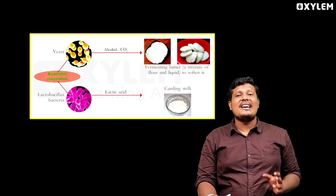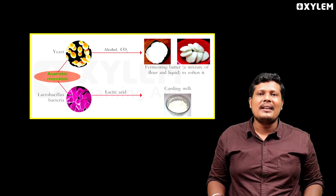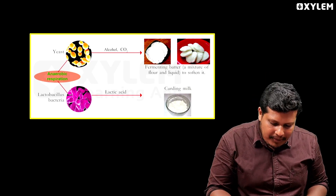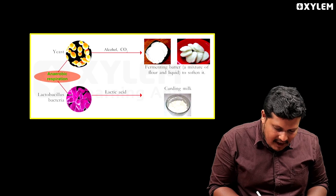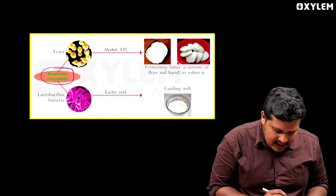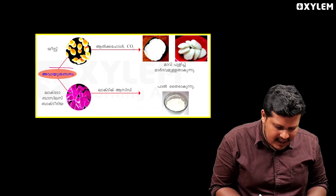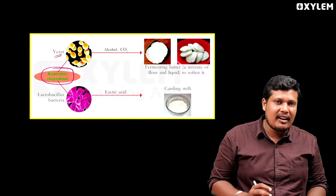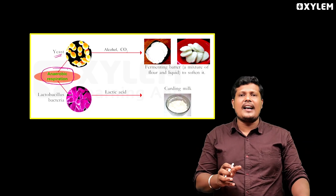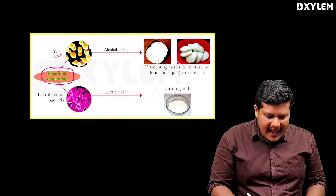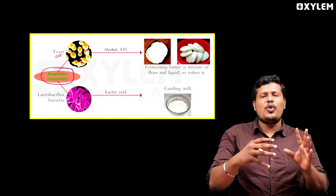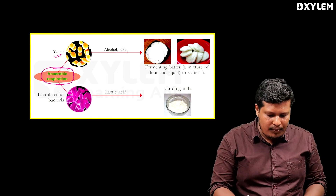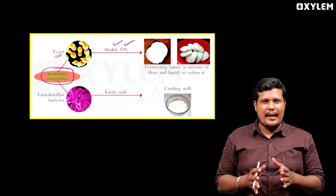Anaerobic respiration — Avayu Shwasanam — this is anaerobic respiration. Yeast undergoes this process. Yeast produces alcohol and carbon dioxide. So when you are drinking alcohol — beer, whiskey, rum, brandy — this is alcohol produced through the fermentation method.